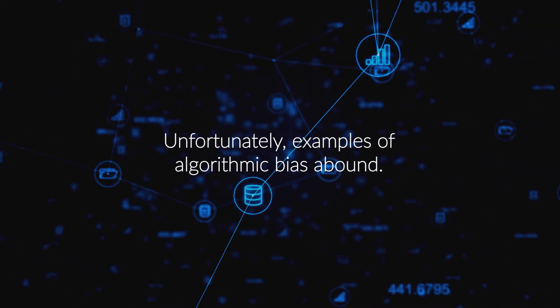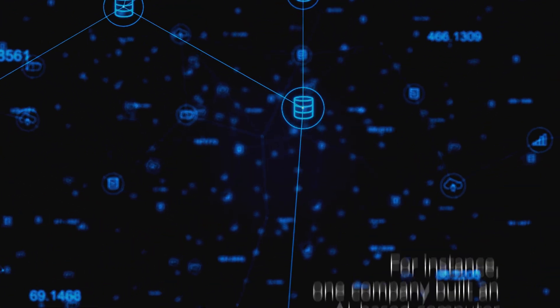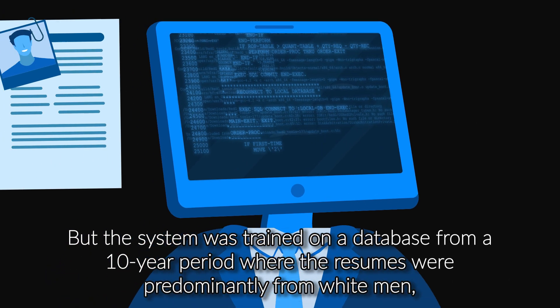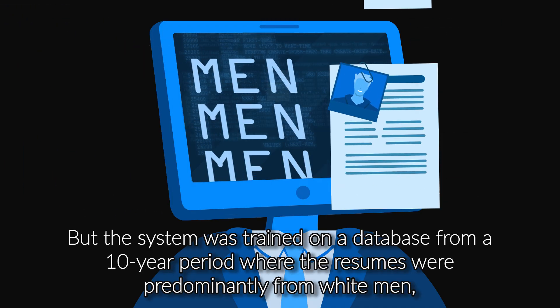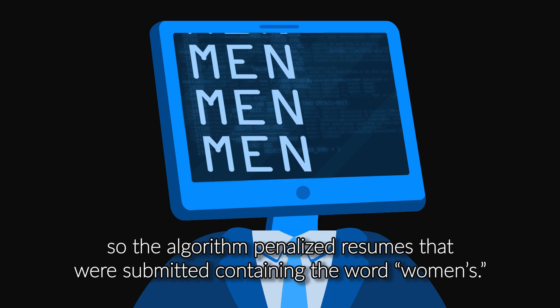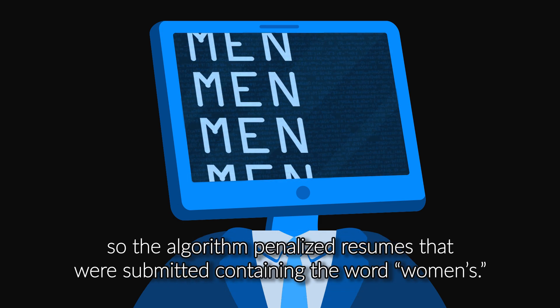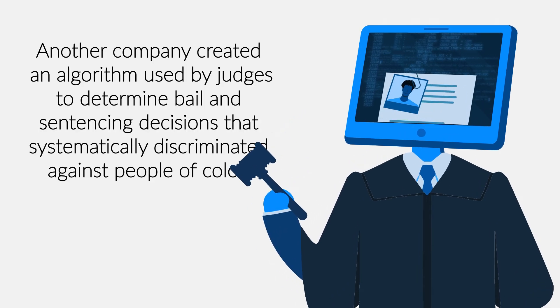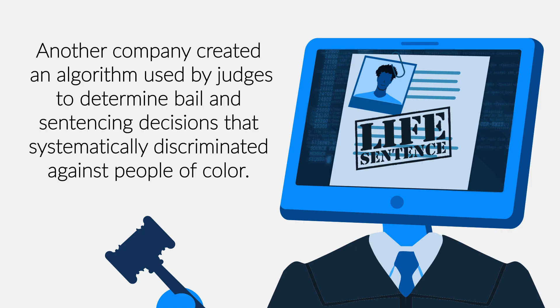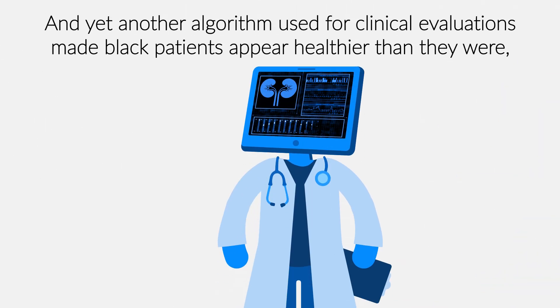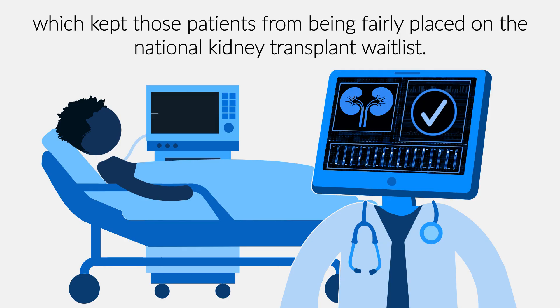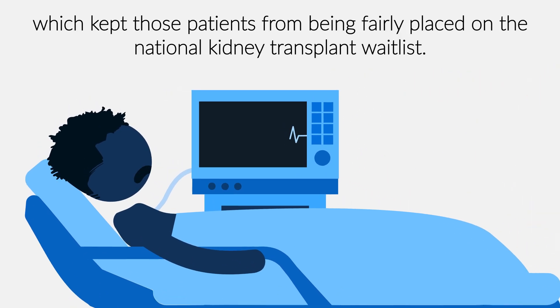Unfortunately, examples of algorithmic bias abound. For instance, one company built an AI-based computer system to handle its hiring processes, but the system was trained on a database from a 10-year period where the resumes were predominantly from white men. So the algorithm penalized resumes containing the word "women's." Another company created an algorithm used by judges to determine bail and sentencing decisions that systematically discriminated against people of color. And yet another algorithm used for clinical evaluations made black patients appear healthier than they were, which kept those patients from being fairly placed on the National Kidney Transplant waitlist.